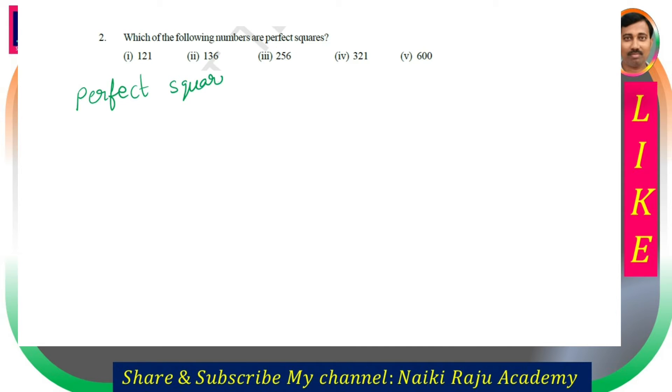Next question: Which of the following numbers are perfect squares? What is a perfect square? Perfect square means a number is expressed as the product of two equal factors. For example, first question, 121 is a perfect square, 11 times 11.